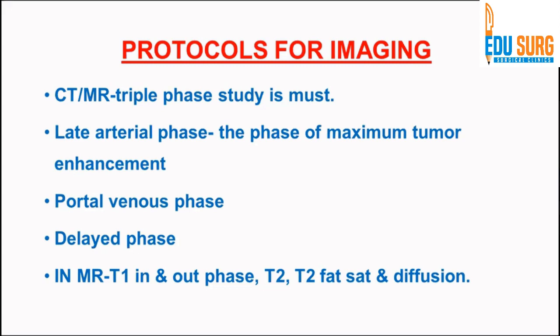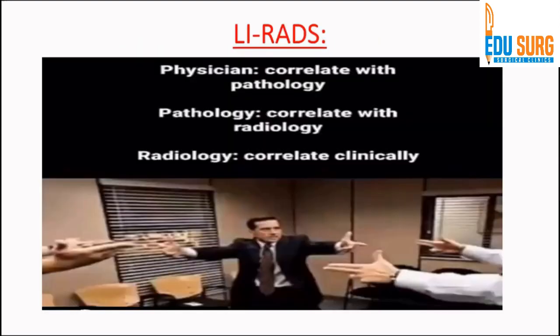In a triple phase study, we perform three phases: late arterial phase, portal venous phase, and delayed phase. The late arterial phase is where HCC enhances the maximum, because HCC derives the majority of its blood supply from the hepatic arteries, while the rest of the parenchyma derives its blood supply from the portal vein. In the portal venous and delayed phases, we look for washout of the lesion. In MRI, we also acquire T1 in-phase and out-of-phase images for detection of fat within the lesion.